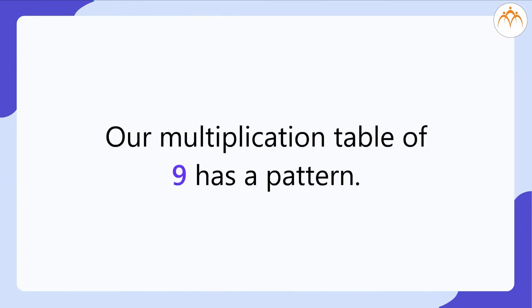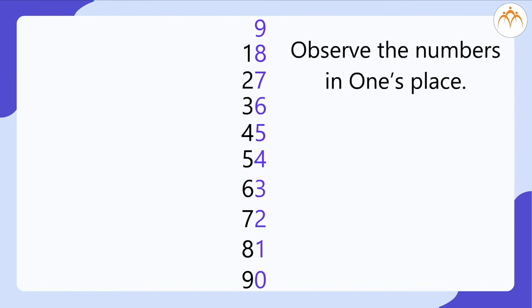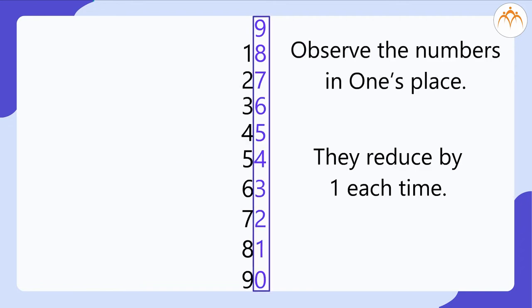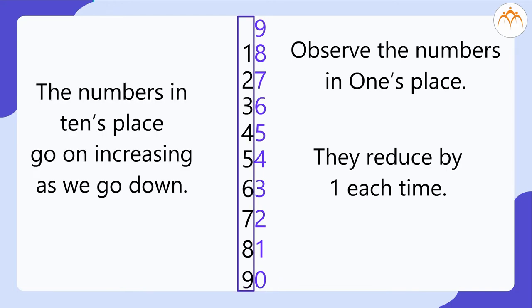Our multiplication table of 9 has a pattern. Observe the numbers in the 1's place. They reduce by 1 each. The numbers in 10's place go on increasing as we go down.